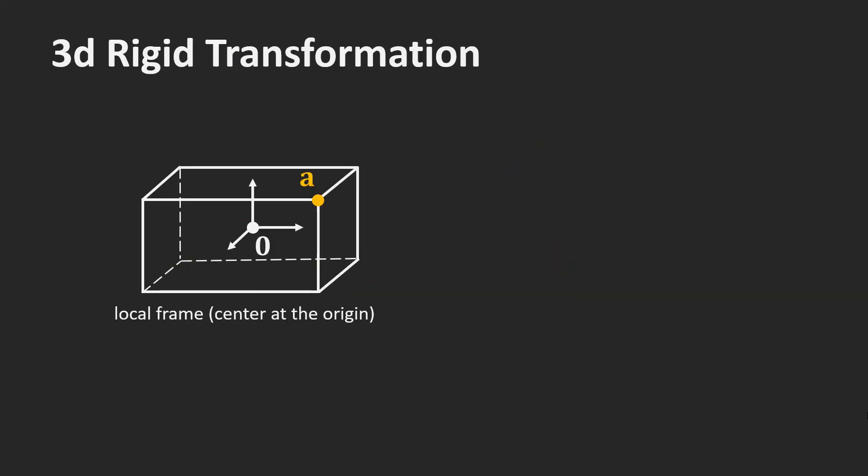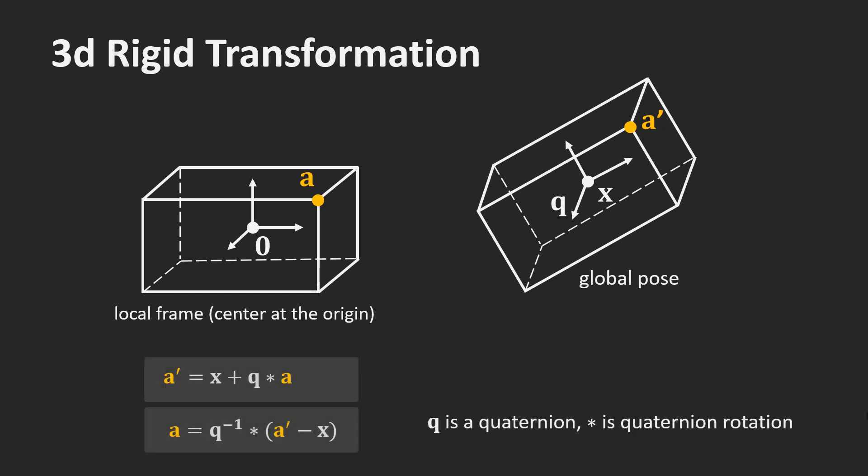We define a local frame for each body. The local frame has its origin at the center of mass of the body and the axes are aligned with the principal axis of the body. The global pose of a rigid body is described by a position x and an orientation q. It defines how a point A in the local frame is transformed to a point A' in the global coordinate frame. These are the equations to go from the local to the global frame and vice versa.